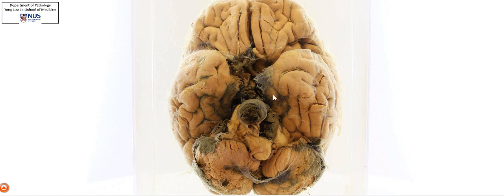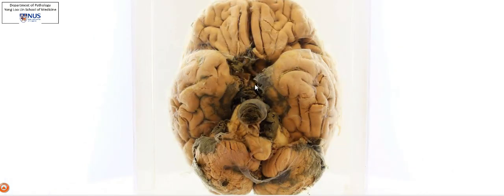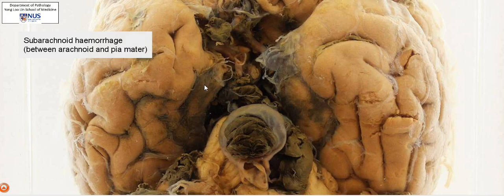There is an obvious area of blackish discoloration here. The surface we're looking at is the arachnoid mater overlying the pia mater, and the main pathology really is viewable on this surface. We see these blackish areas — what this is are areas of hemorrhage within the subarachnoid space, still below the arachnoid mater and just overlying the pia mater.